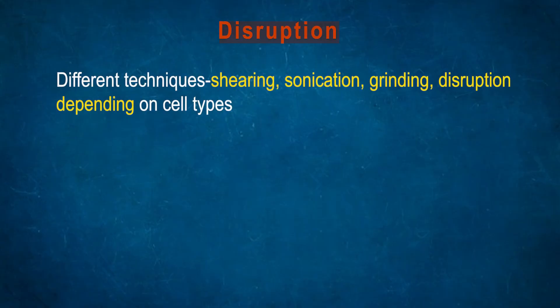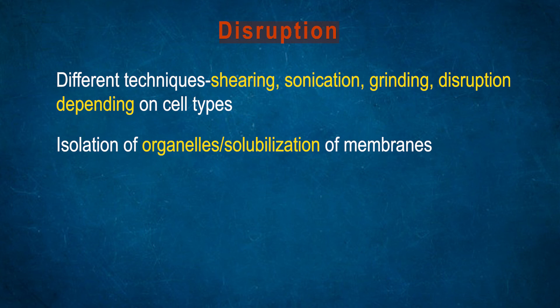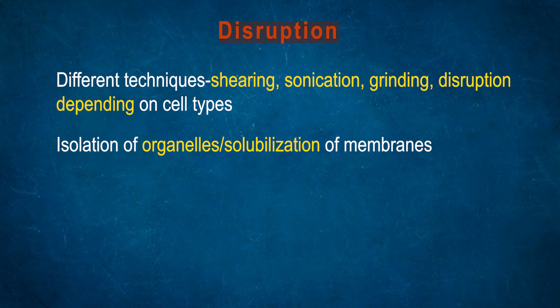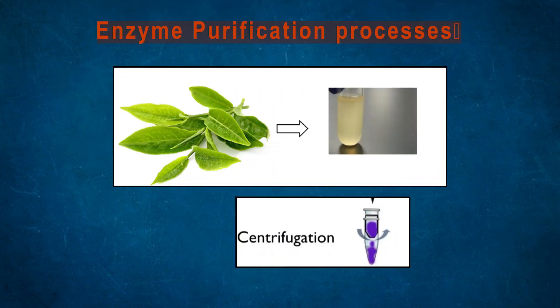The first step is disruption or homogenization of cell tissues. It can be done by different techniques like shearing, sonication, grinding, and freeze pressure. Then isolation of organelles and solubilization of membranes is needed. We can find excreted proteins in the media as well. Clearing of extracts is done by column steps and clearing by centrifugation and filtration.